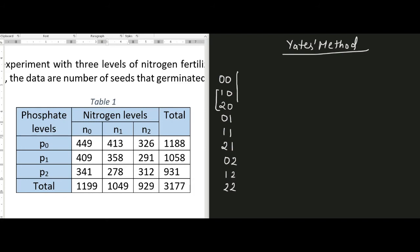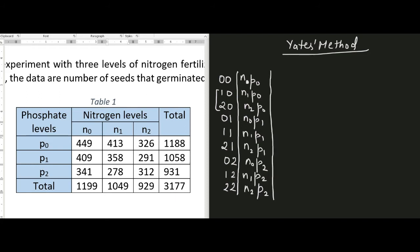Writing these in terms of notation using lowercase Latin letters: 00 is N0P0, 10 is N1P0, 20 is N2P0, 01 is N0P1, 10 is N1P1, and similarly N2P1, N0P2, N1P2, and N2P2. In the next column we write the yields corresponding to each treatment combination. Corresponding to N0P0 the yield is 449, N1P0 is 413, N2P0 is 326, and then N0P1 is 409.